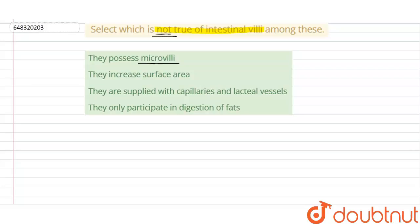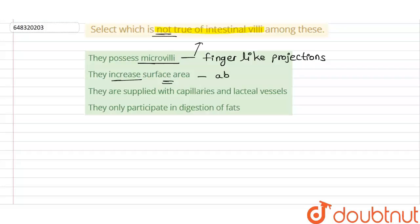The first statement is that they possess microvilli — that is true. The intestinal villi possess microvilli, which are finger-like projections. These microvilli increase the surface area for absorption, making absorption easier. So the first and second statements are true.